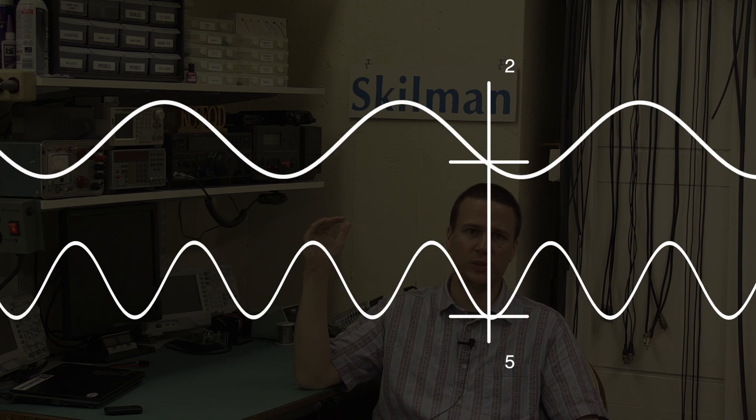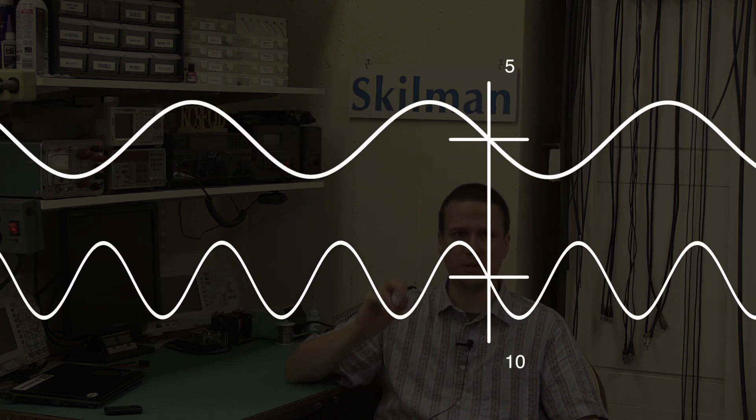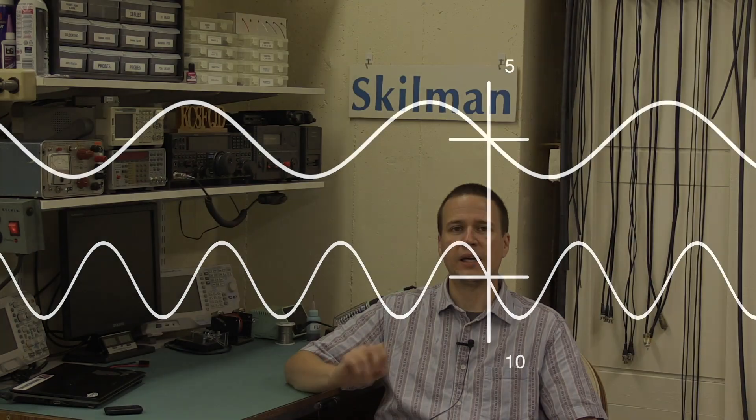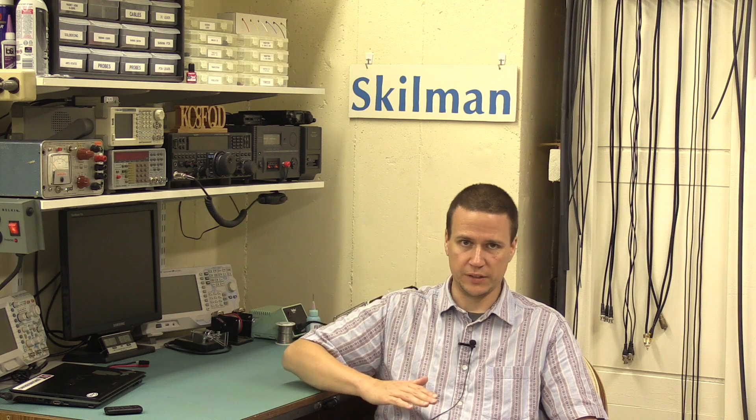So, we can see that in the time it takes for this wave to complete a few cycles, the other wave with half the wavelength completes twice as many. That's the relationship. As wavelength decreases, frequency increases proportionally. We say that they have an inverse relationship.